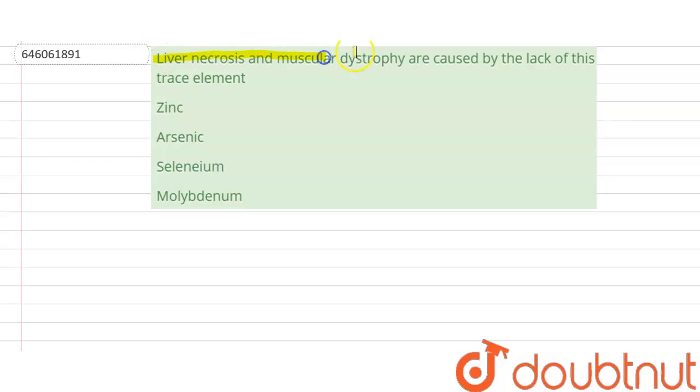Liver necrosis and muscular dystrophy are caused by the lack of this trace element. Our options are zinc, arsenic, selenium, or molybdenum.